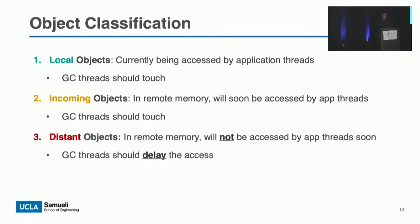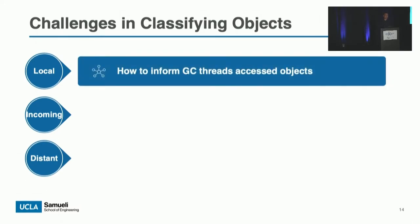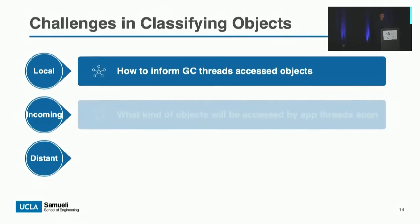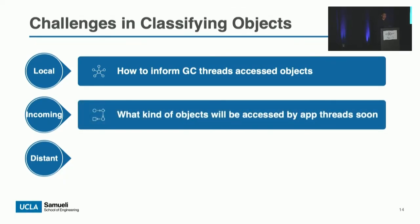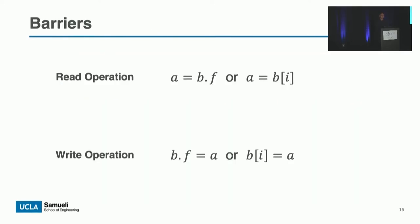The challenge is how to let GC threads identify objects in different categories. Specifically: how do we let GC threads know what objects are currently being accessed by applications? What objects will be accessed soon and should be regarded as incoming? And how can we know if an object is in local memory or not? To solve these challenges, I first introduce barriers: in many runtimes like OpenJDK, a barrier is a piece of code executed by the runtime at each heap read and write in the application. Memliner extends barriers to solve these classification challenges.